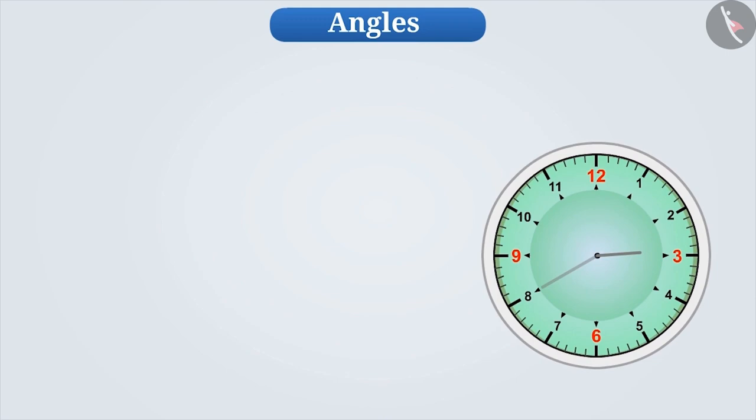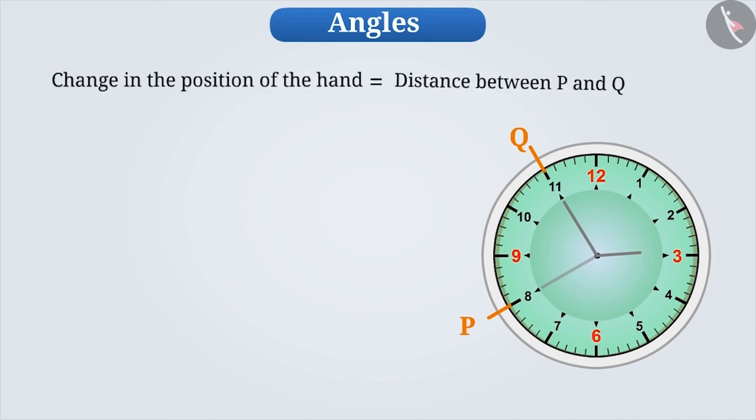Now suppose the hand on the clock moves from place P to Q. If we need to find the change in the position of the hand, would it be correct to find the distance between P and Q? Give it a try.